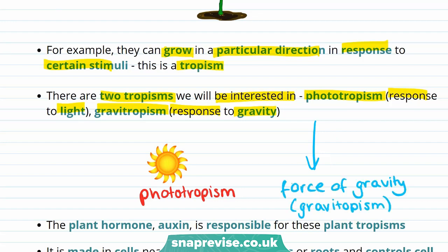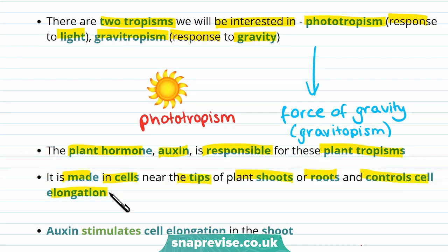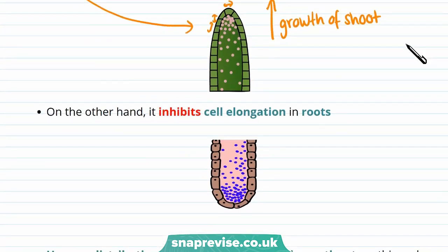So what causes these changes in growth? The plant hormone auxin is responsible for these plant tropisms. It's made in cells near the tips of plant shoots or roots and controls cell elongation. Cell elongation basically means that the cells of the plant get bigger or longer. Auxin stimulates cell elongation in the shoot, causing cells in the tip of the shoot to get bigger, which causes growth of the shoot.